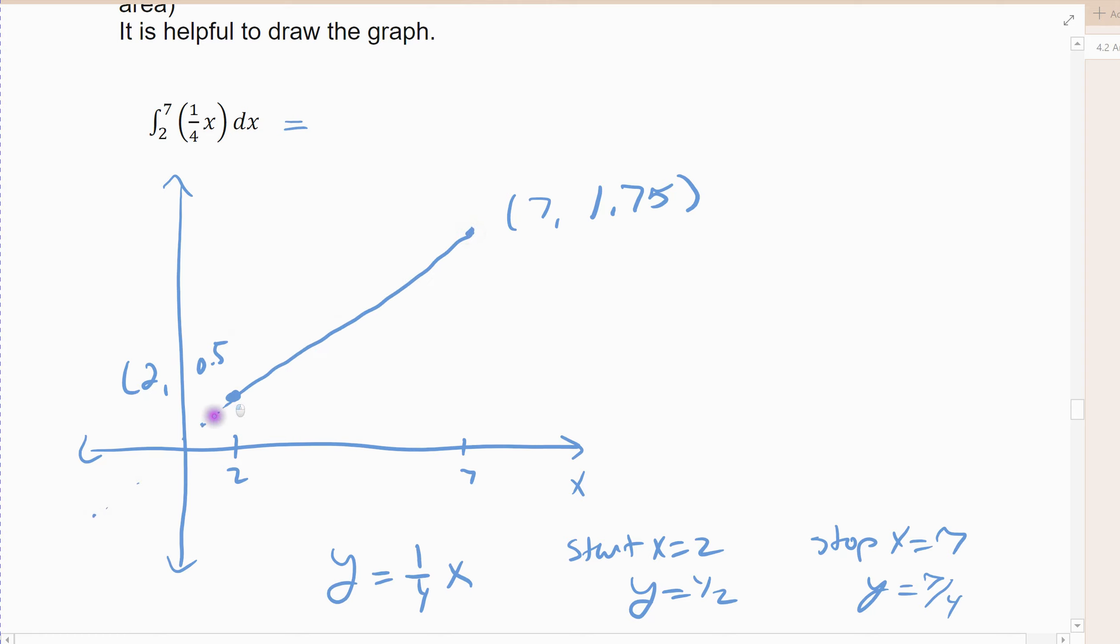Now, technically, the line goes on forever. But I don't want the forever part. I'm only interested in between 2 and 7. And so this is the area I want to find. I want to find the area under this curve between 2 and 7. So this area here is what I'm looking for.